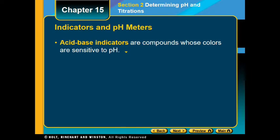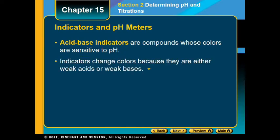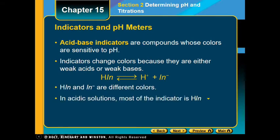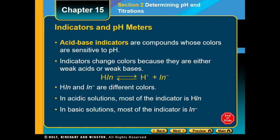Acid-base indicators change colors because they're sensitive to pH. The color changes because of a weak acid or weak base. The abbreviation IN stands for indicator. H-IN would be your acid indicator, which breaks into the hydrogen ion and your indicator anion. In an acidic solution, most indicators are HIN, and in basic solution, most are just the indicator anion.